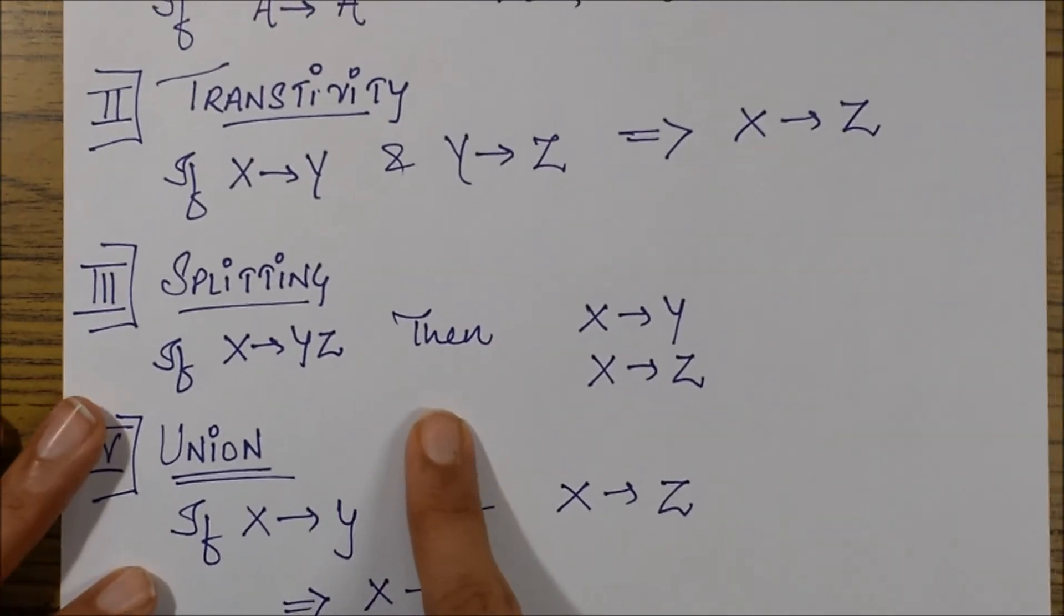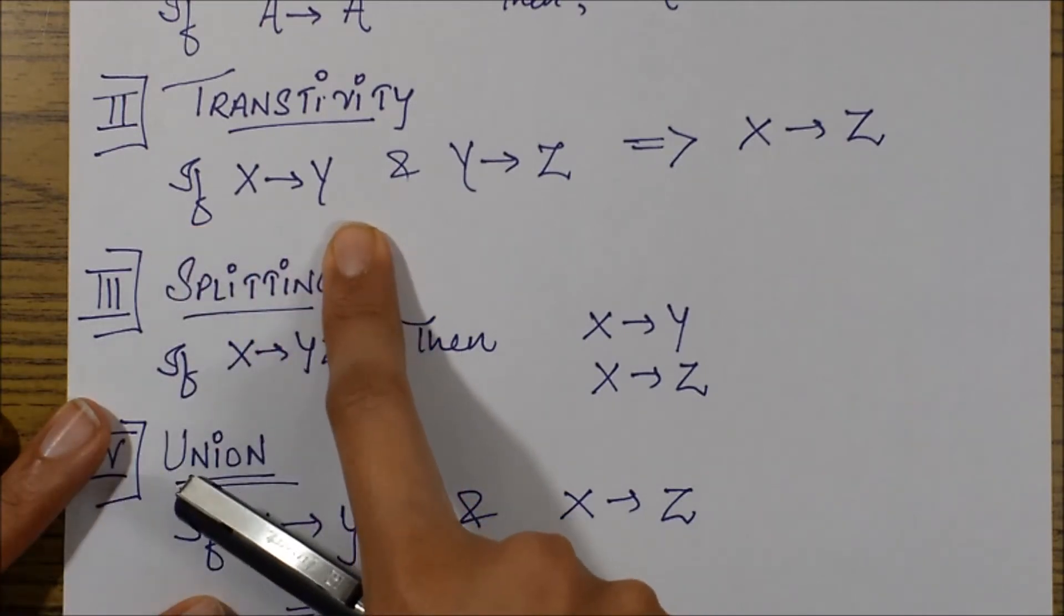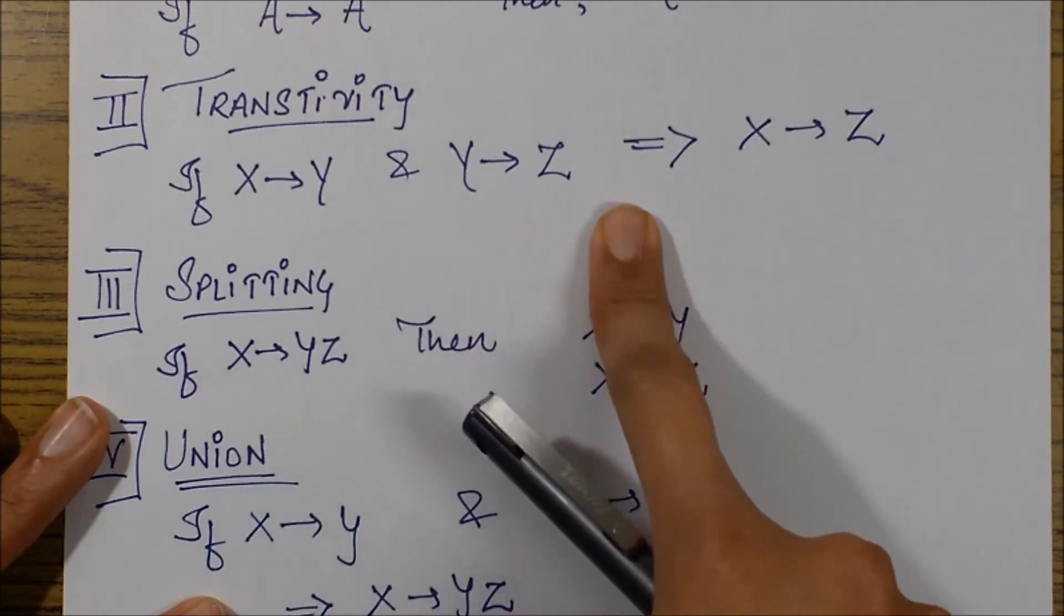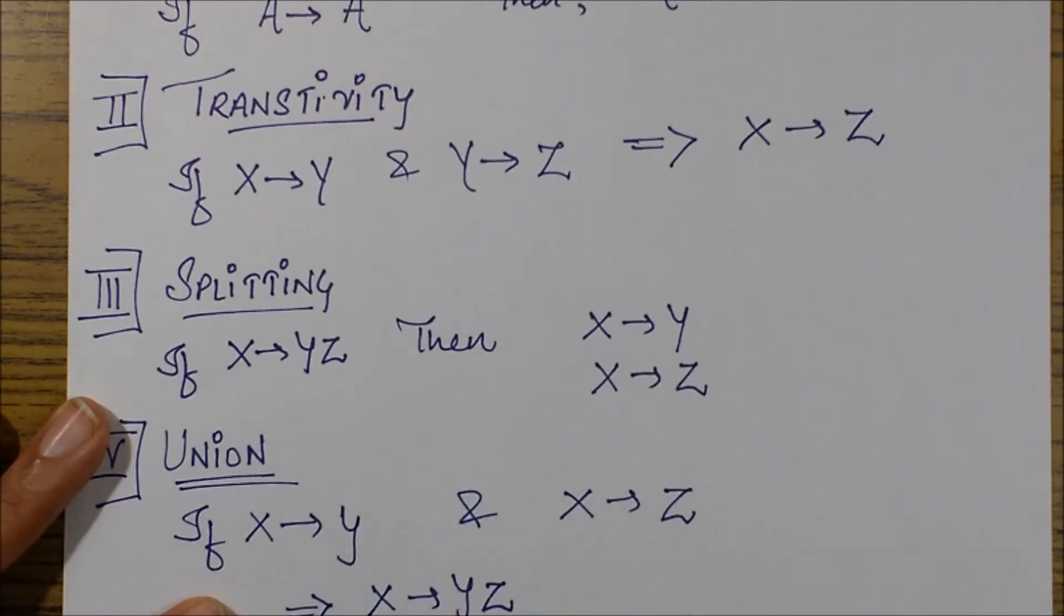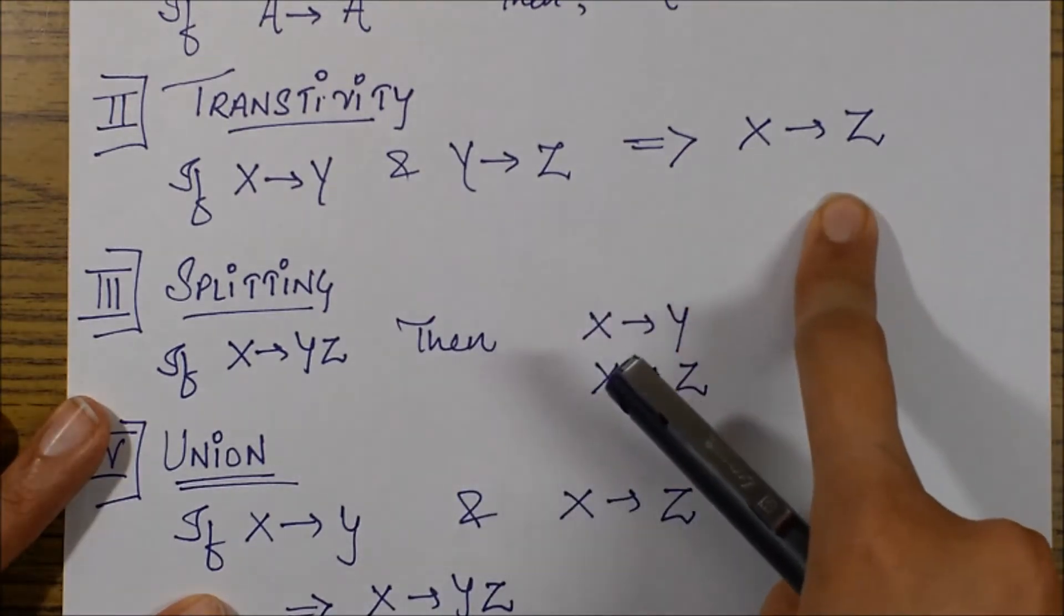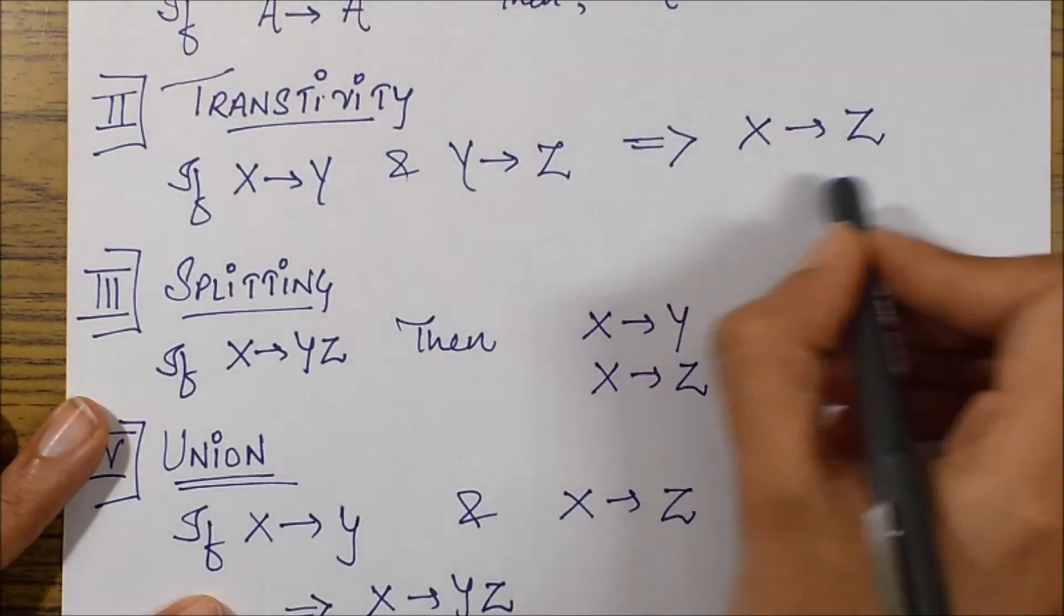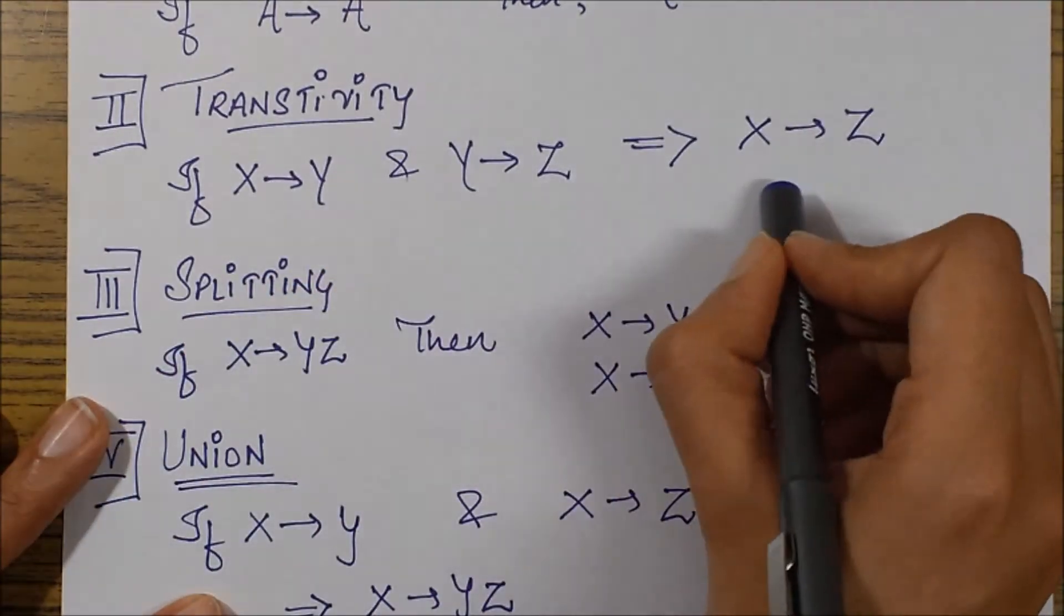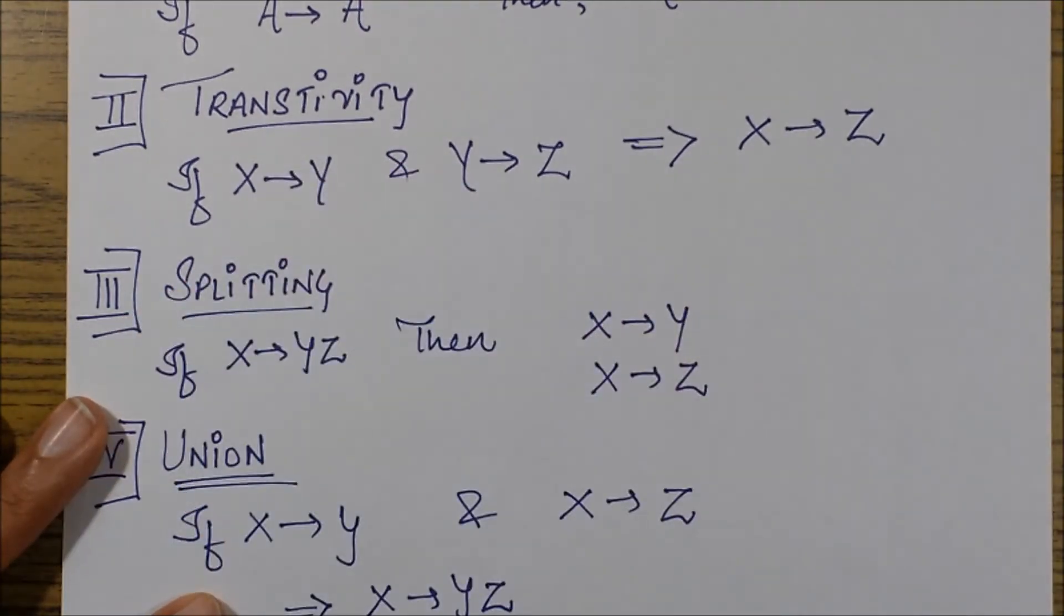Next is transitivity. What does transitivity state? Transitivity states that if X goes to Y, if X determines Y and Y determines Z - these are all attributes that I'm discussing, XYZ, ABC, everything is an attribute - so if X determines Y and Y determines Z, then we can say that X determines Z transitively. That means X is determining Z indirectly through Y according to transitivity.